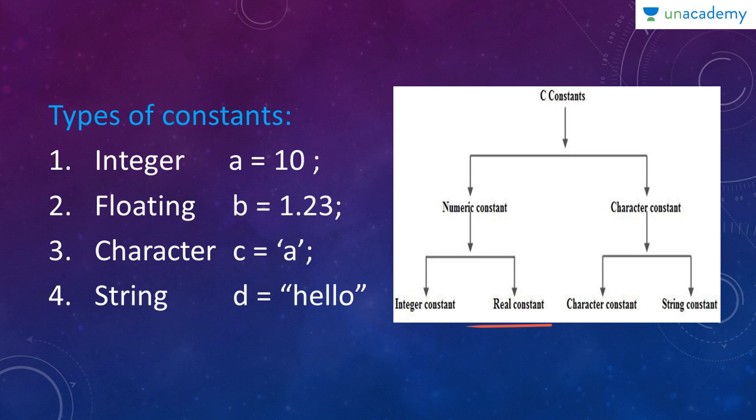In this example, for integer constant, we have taken a equals to 10. a holds the value 10. Hence, in the program, it remains the same. Floating point constants are b equals to 1.23. It holds a floating point value. Character constant c equals to a. A is enclosed within a single quote. String constant is d equals to value, enclosed within a double quote. Strings are enclosed in double quotes and character is enclosed in single quote.